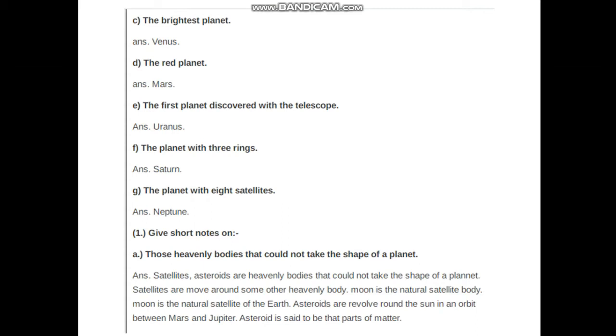Give short notes on those heavenly bodies that could not take the shape of a planet. Satellites and asteroids are heavenly bodies that could not take the shape of a planet. Satellites move around some other heavenly body. Moon is the natural satellite of the earth. Asteroids revolve around the sun in an orbit between Mars and Jupiter. Asteroids are said to be parts of matter.